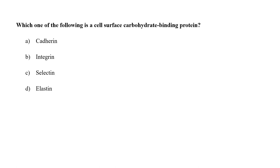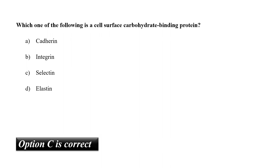Which one of the following is a cell surface carbohydrate binding protein? A. Cadherin, B. Integrin, C. Selectin, or D. Elastin? Cadherin is a calcium-dependent adhesion protein. Integrin helps in the binding of cell and extracellular matrix (ECM). Selectin, also called lectin, is a cell surface carbohydrate binding protein. Elastin is a protein of the extracellular matrix. So the correct answer is option C, selectin.